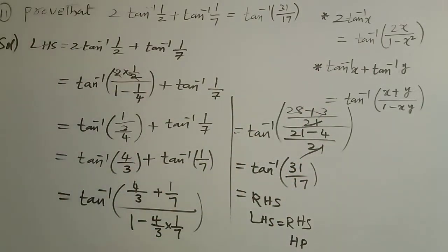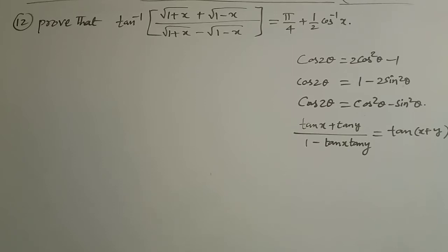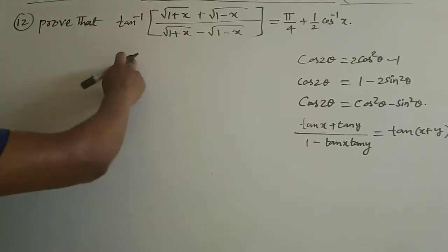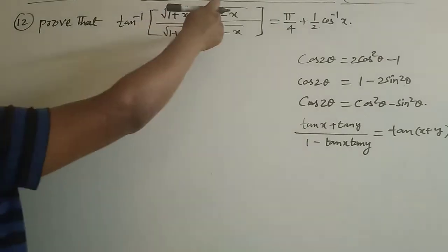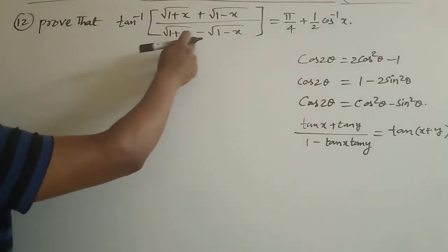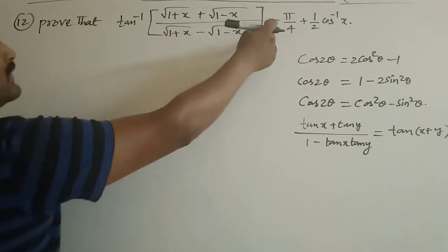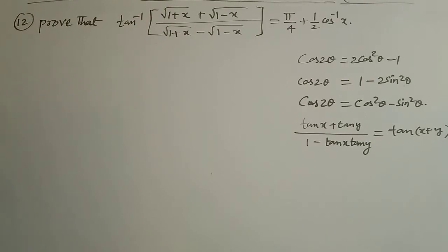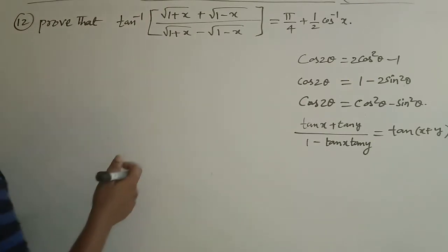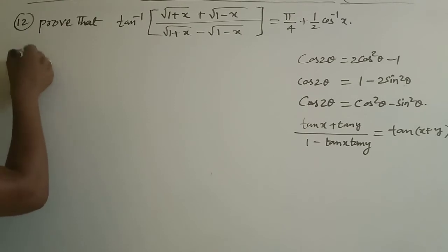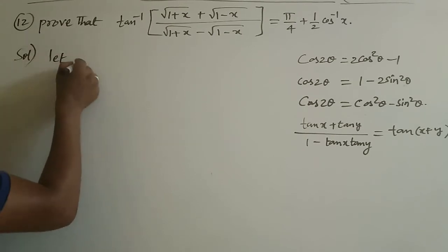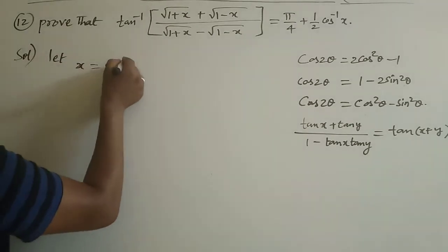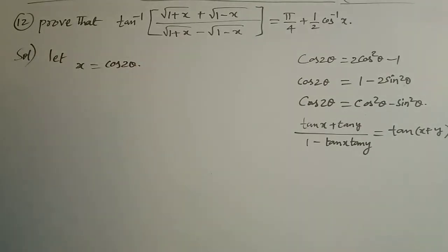That is about problem number 11. Let's move on to problem number 12. Prove that tan⁻¹((√(1+x) + √(1-x)) / (√(1+x) - √(1-x))) = π/4 + ½cos⁻¹x. To solve this, let x = cos2θ. Recall the formulas: cos2θ = cos²θ - sin²θ, and in cos form: 1 + cos2θ = 2cos²θ, and 1 - cos2θ = 2sin²θ.